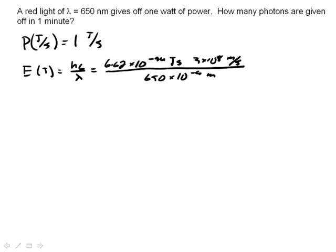And let's go ahead and plug this all into my calculator here. And when I go ahead and do these numbers, I get something on the order of 3 times 10 to the minus 19 joules per photon.